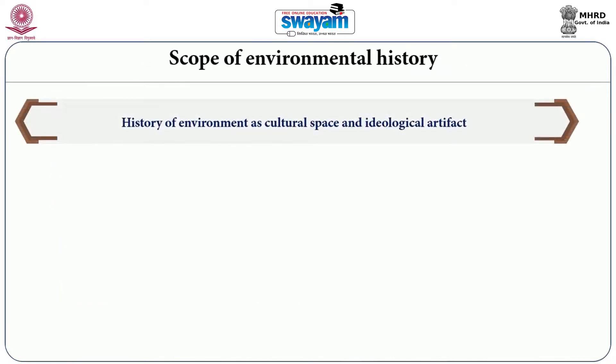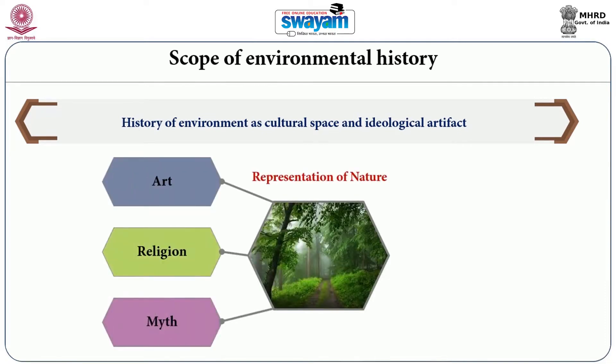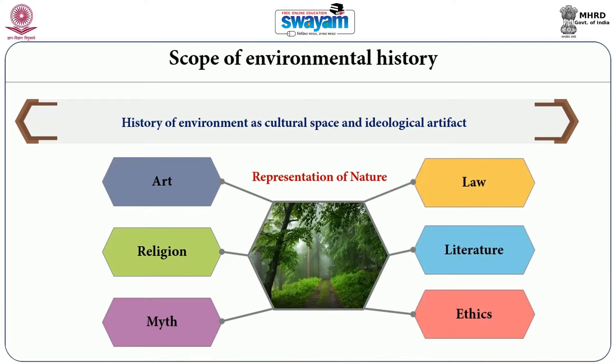The second important scope of environmental history is that it tries to study nature as a cultural space. For environmental history, nature is not just a physical phenomenon — nature also becomes a space for cultural expression. It is an element of cultural space and ideological artifact. In this perspective, the focus of environmental history is on representation of nature in art, religion, myth, literature, law, and customs.